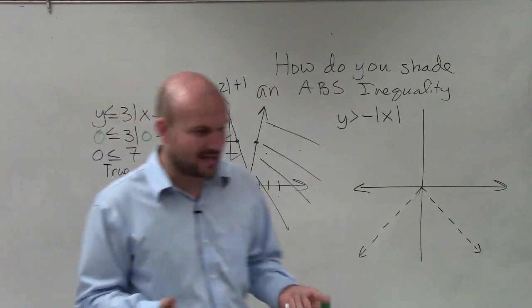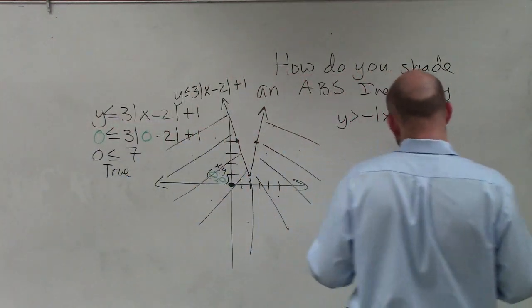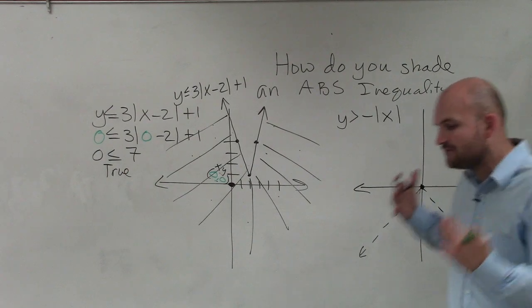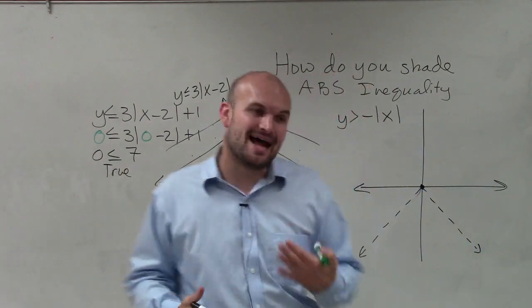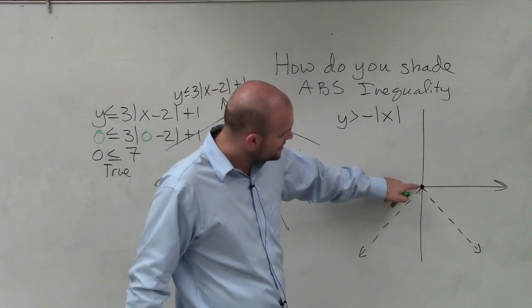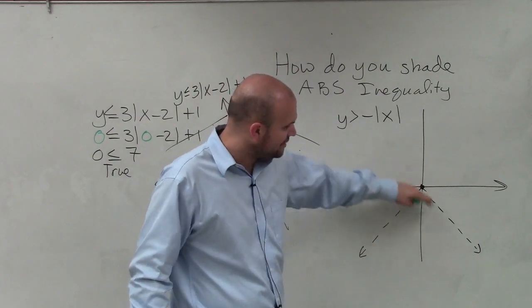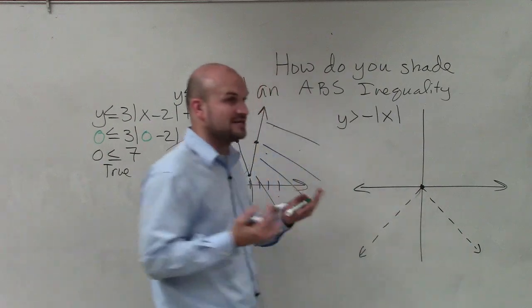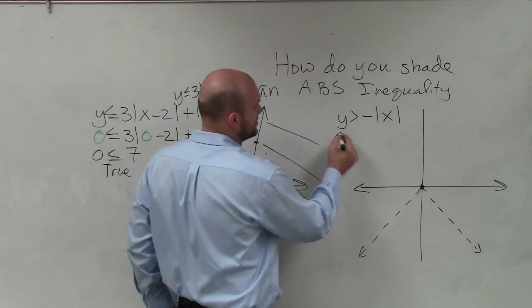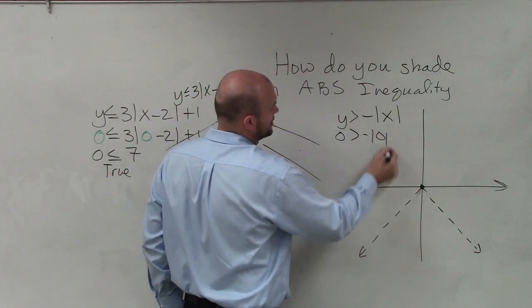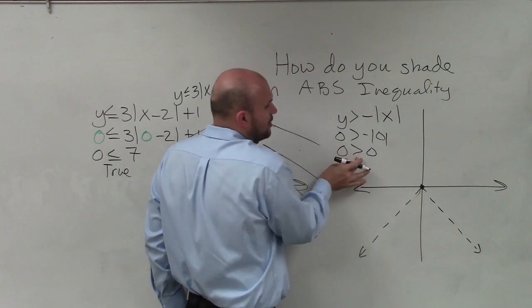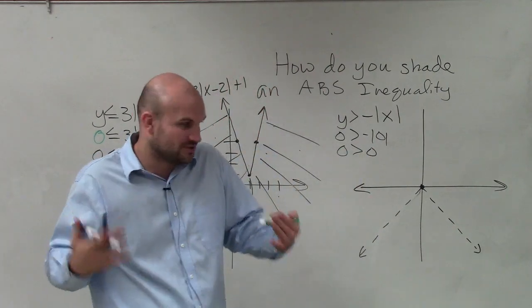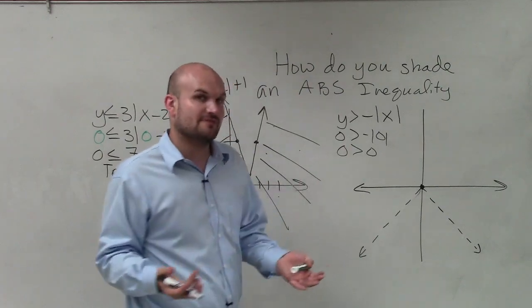Now let's look at our next example. Choosing the test point is very important, and you'd want to always use (0, 0) when it's available. But this time it's not available because (0, 0) is on my graph. We already know that's not valid because this is a dashed line, and a dashed line means it's not part of the solution. If we check: 0 is greater than 0 — well, that's false. 0 is never greater than 0; 0 equals 0. So we're going to have to choose a different test point.